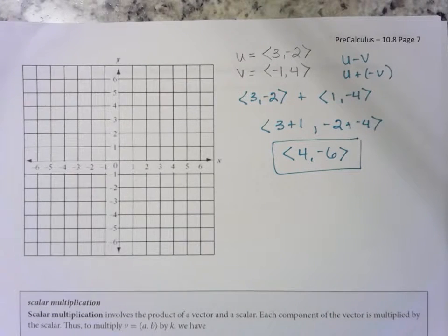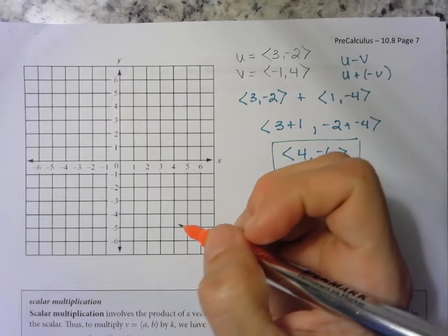Let's draw a picture and see what this looks like. We had <3, -2>.